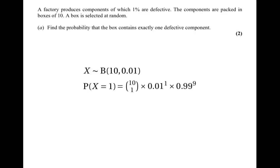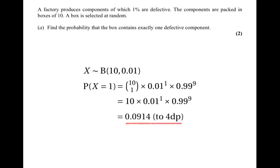The formula gives us 10 choose 1 times 0.01 to the power of 1 times 0.99 to the power of 9. Since 10 choose 1 is just 10 — n choose 1 is always n — the sum we have to do is 10 times 0.01 times 0.99 to the power of 9, which gives the answer 0.0914 to four decimal places.